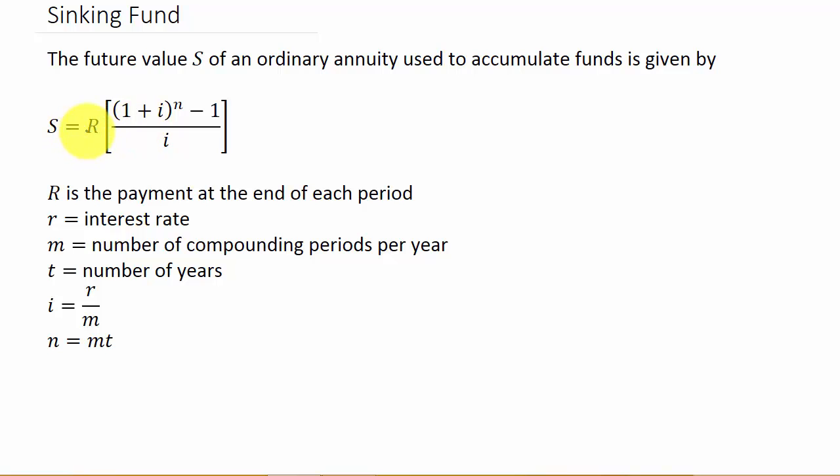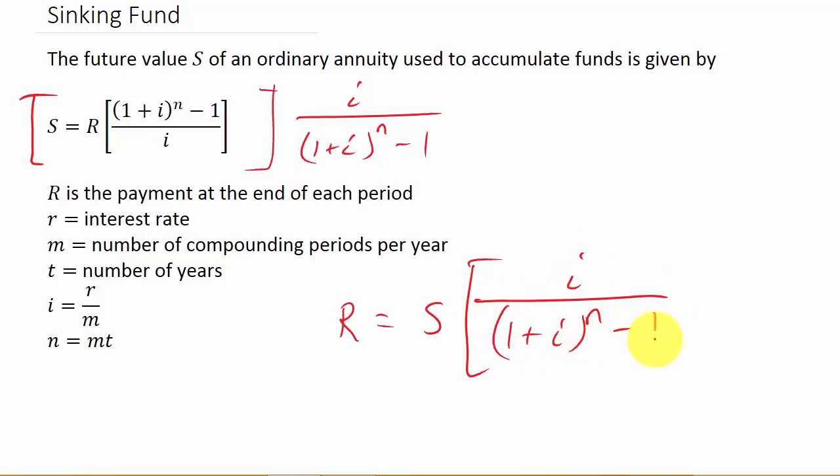So if you take this and you multiply this whole thing here by the reciprocal here, I over 1 plus I to the n minus 1, well you see that's going to cancel this out here. And so you would be left with just the R on this side. And then over here you would be left with S times this, I over 1 plus I to the n minus 1. And this is your sinking fund formula. So it's that's all it is, is this. And I do have a video on future value of an ordinary annuity. You can check that out.